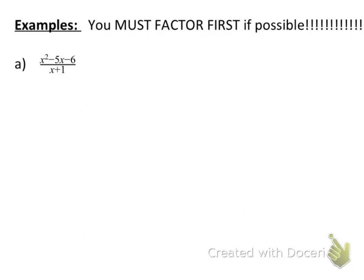Now let's look at what that means with algebraic rational expressions. We must factor first. We can't just cancel out those x's — that doesn't work because they're in terms that are being added or subtracted to another term.